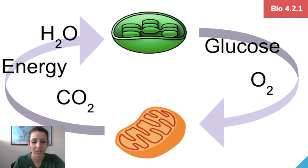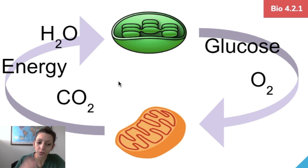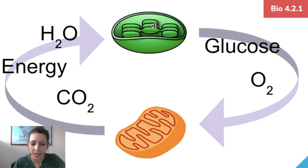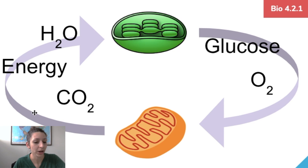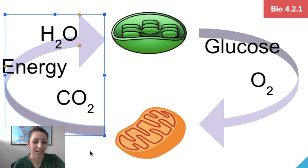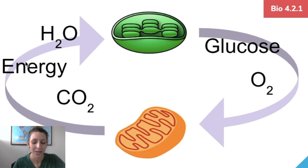These two processes feed each other. In the chloroplast, photosynthesis uses sunlight energy, water, and carbon dioxide to produce glucose and oxygen. That glucose and oxygen then go into cellular respiration in the mitochondria, which produces carbon dioxide, water, and ATP energy. The carbon dioxide and water cycle back into photosynthesis. These two processes are really complementary and we need to recognize how important they are for each other.